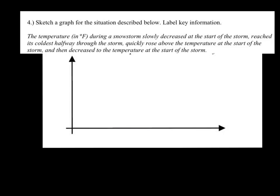So in example 4, it says sketch a graph for the situation described below and label your key information. So it says the temperature in Fahrenheit during a snowstorm slowly decreased at the start of the storm. Then it reached the coldest halfway through the storm, and then quickly rose above the temperature at the start, and then decreased to the temperature at the start of the storm.